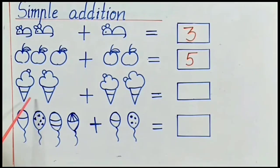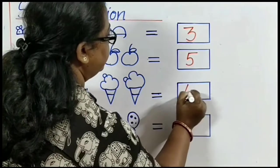Next picture. Yummy ice creams are there. Let's count. 1, 2. And that side? 1, 2. So, all together, how many ice creams are there? 1, 2, 3 and 4. All together, there are 4 ice creams.